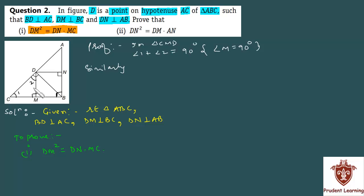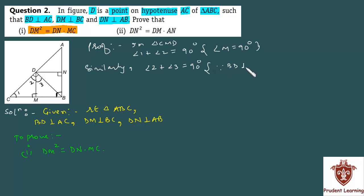Similarly, angle 2 and angle 3 together also sum to 90 degrees. This is because BD is perpendicular to AC. Since BD is on AC and perpendicular to it, that angle is 90 degrees. So angle 2 plus angle 3 equals 90 degrees. This is equation 2.